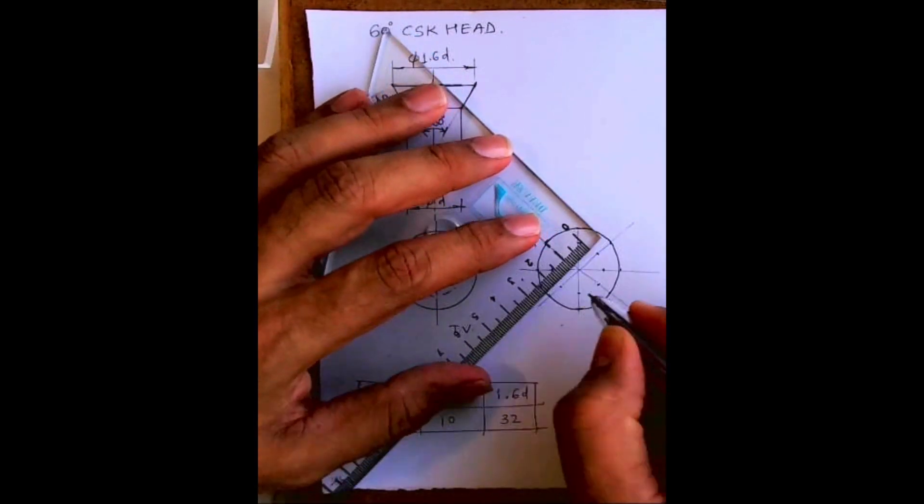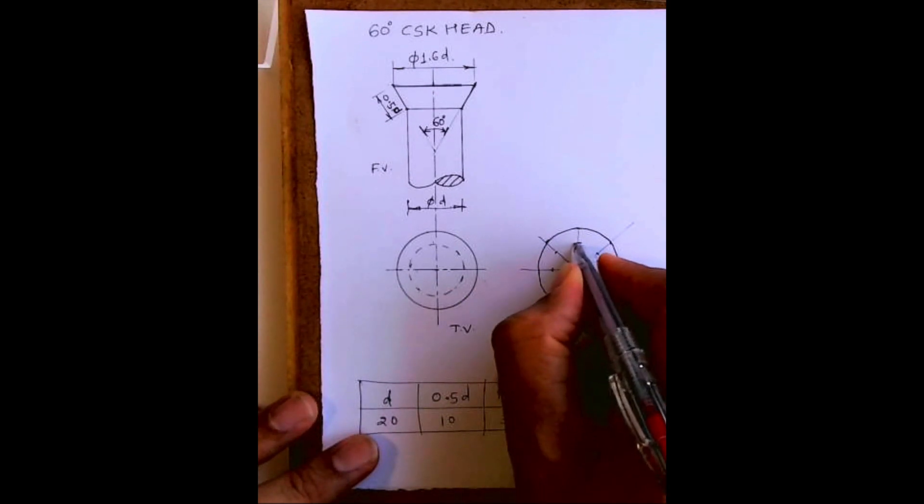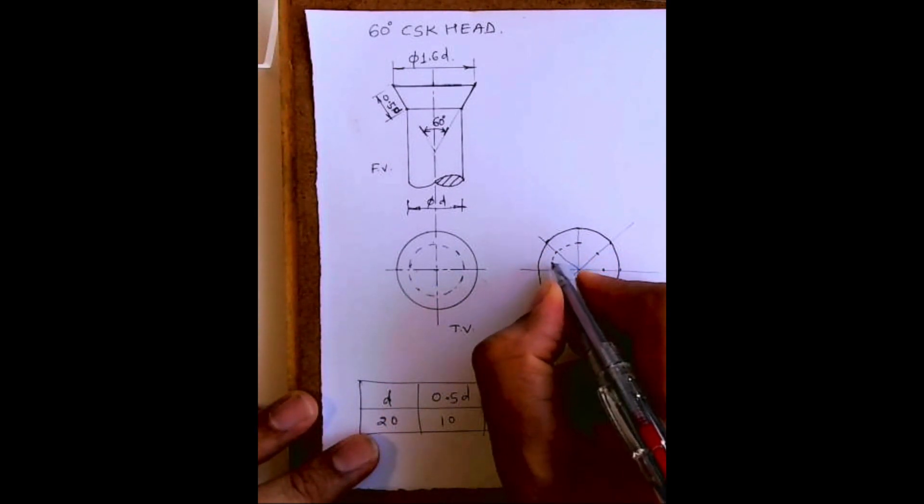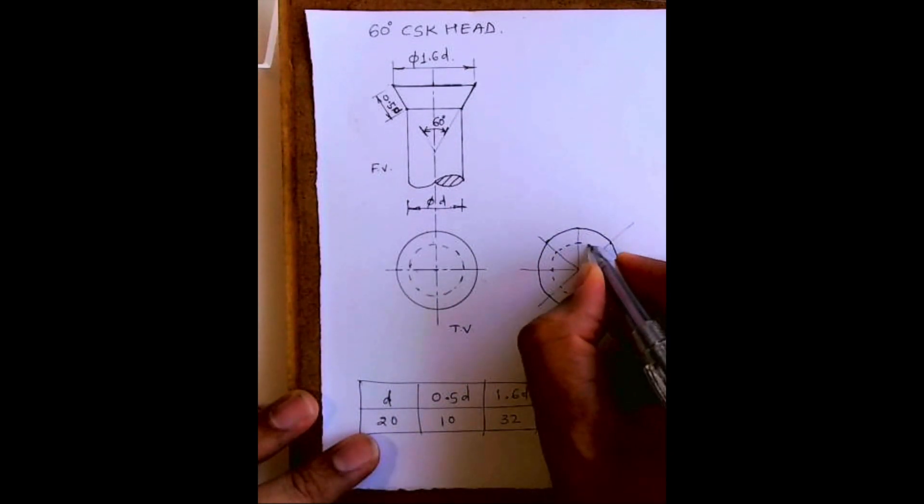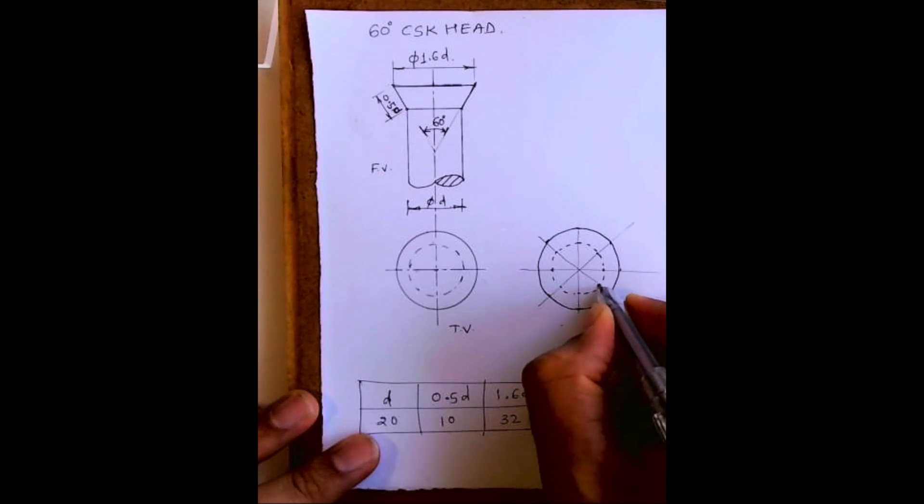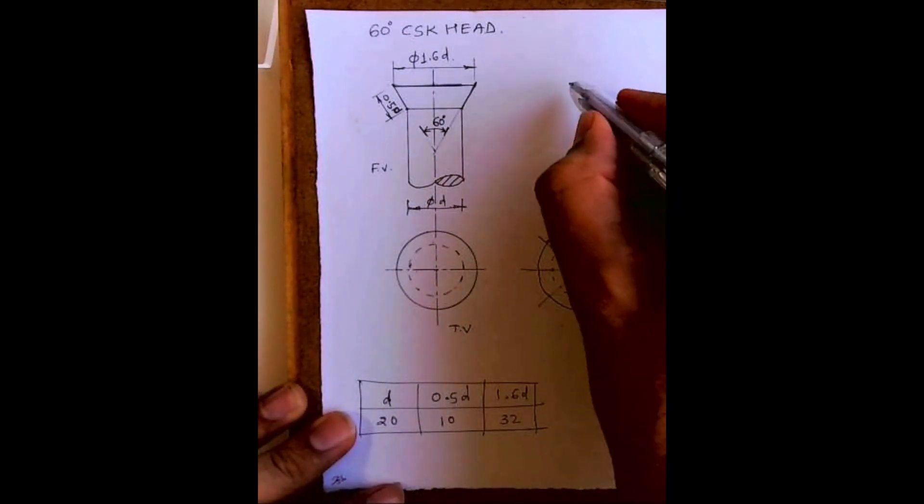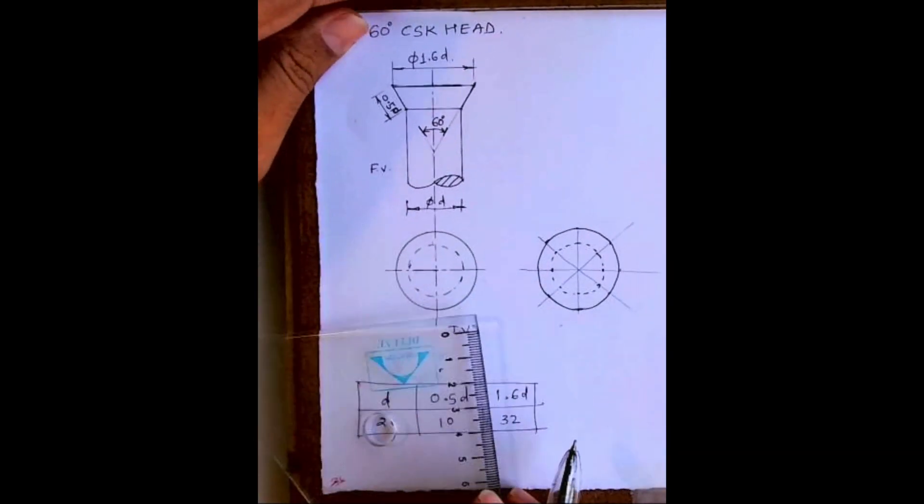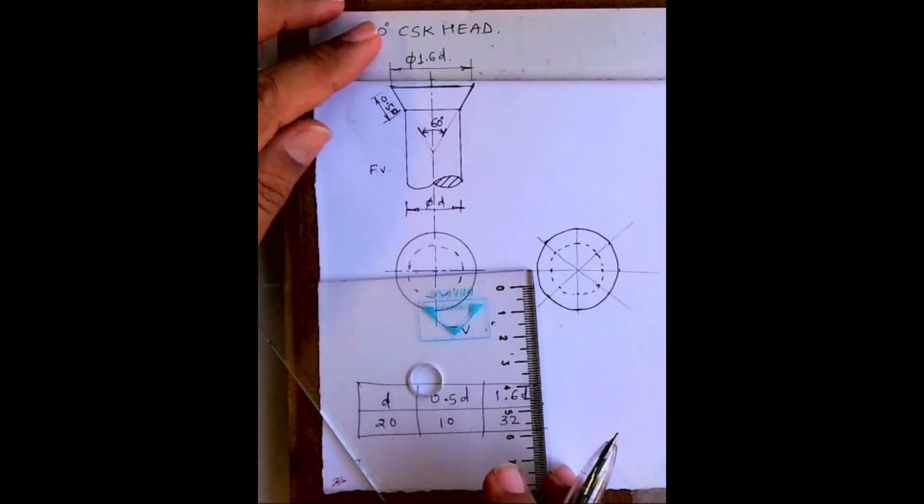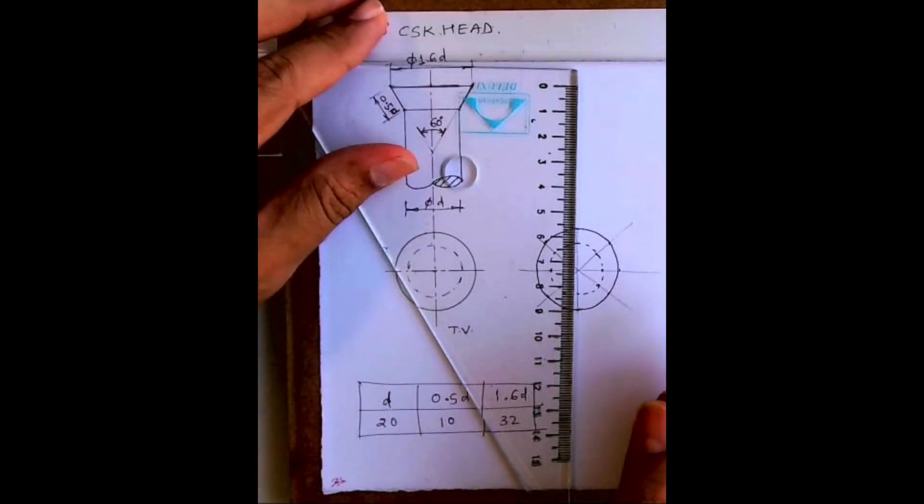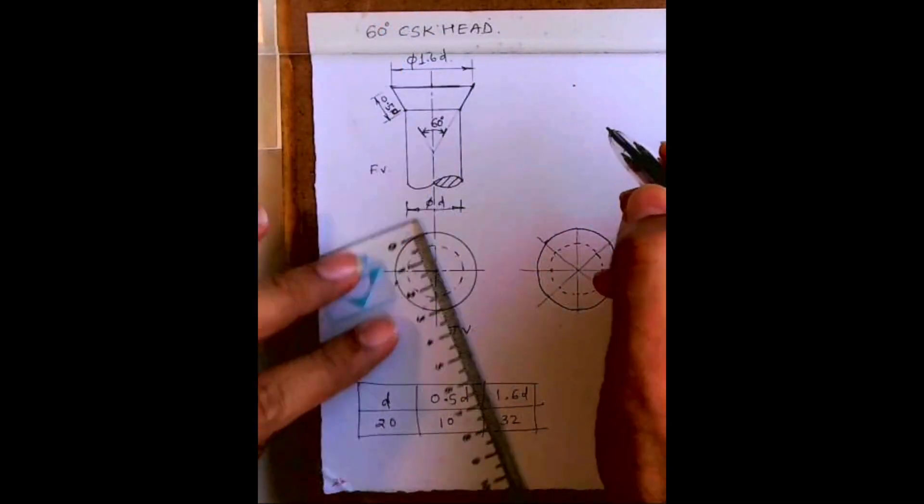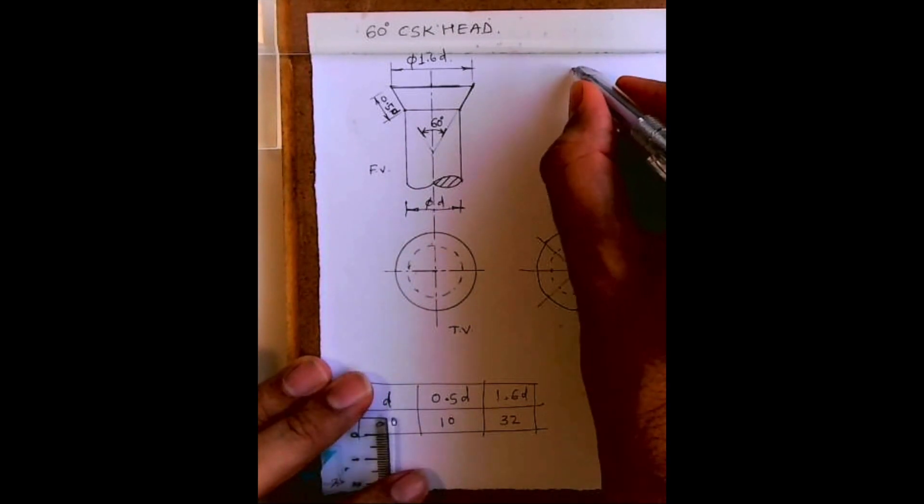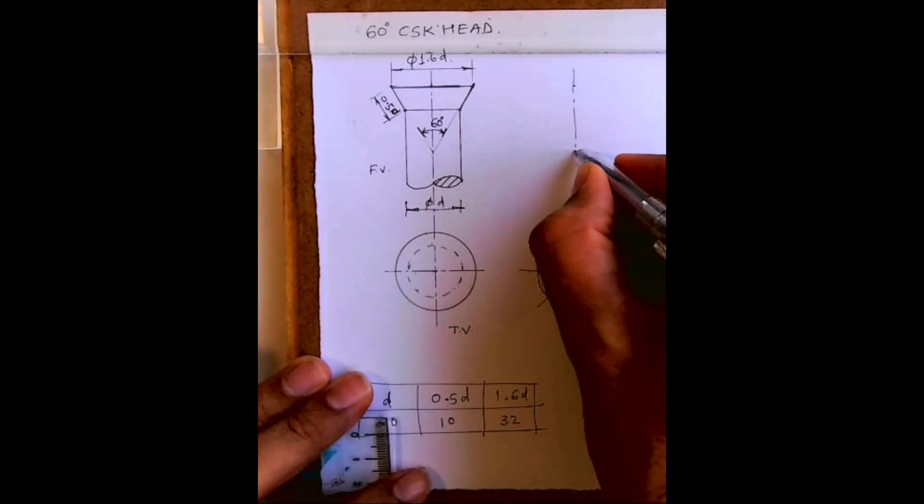So it will be dotted. Then you will draw the front view. You see I'm marking the points and then I will draw a vertical line.